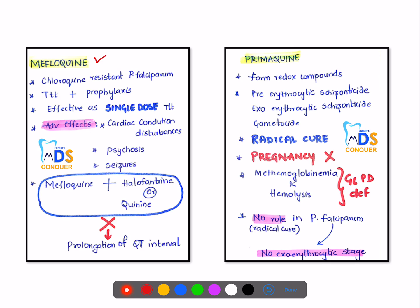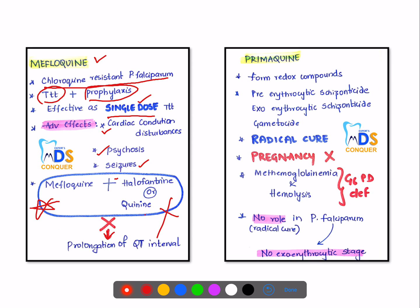Mefloquine is also used in chloroquine-resistant falciparum malaria. It can be used both for treatment and prophylaxis, and is effective as a single dose. Adverse effects include cardiac disturbances, psychosis, and seizures. When mefloquine is used with halofantrine or quinine, it causes prolongation of the QT interval, and therefore this combination is not recommended.